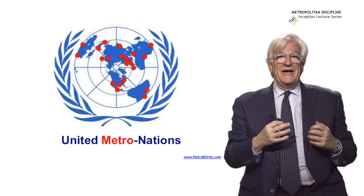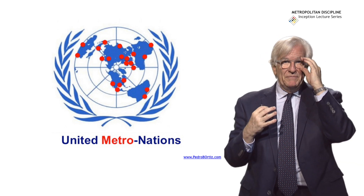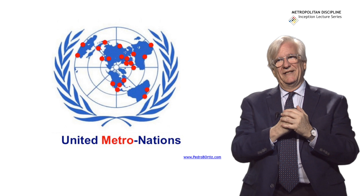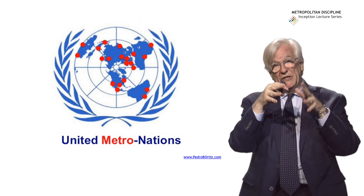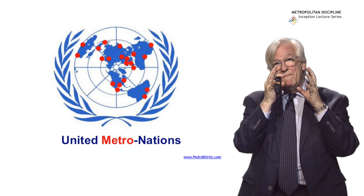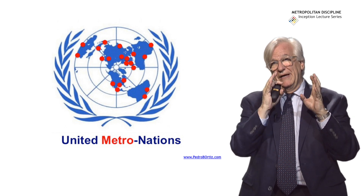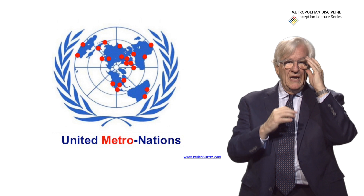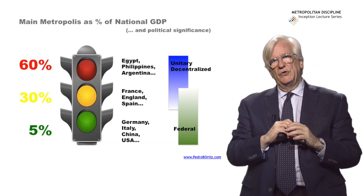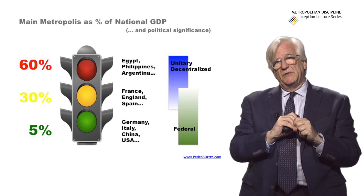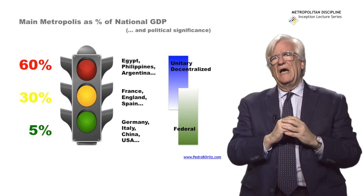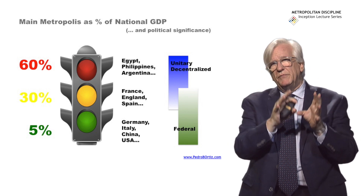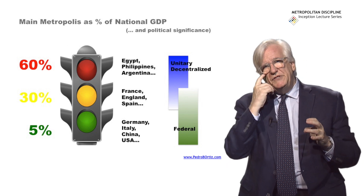Probably in the future, we will have more significant decisions made at the metropolitan level than at the national level. As a joke, we present the possibility of a United Nations that incorporates metropolises, because they are really the main wealth-building areas of the world. Already, metropolises produce 66 percent of the GDP of the world. The problem is that while they have economic power, political power becomes problematic when a nation has only one metropolis that accounts for around 60 percent of its GDP.